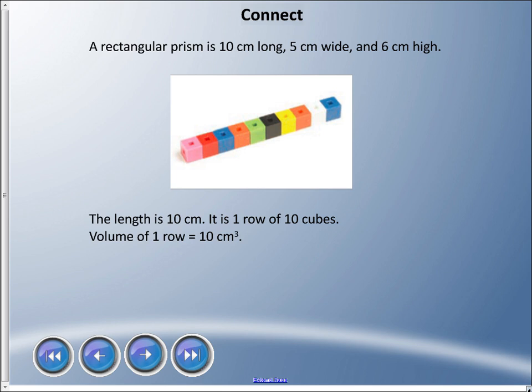We're going to start talking about a rectangular prism that's 10 centimeters long, 5 centimeters wide, and 6 centimeters high. This picture is not that object yet, but we're just going to slowly build it here. The first thing is we have a length of 10 centimeters. I have these 10 cubes here put together, and we could say that one row of those cubes is 10 centimeters cubed.